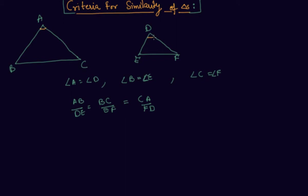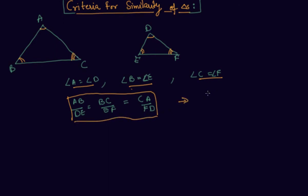This angle should be equal to this, this angle should be equal to this angle, and this angle should be equal to this angle — as we have written over here. And the condition is that the two sides should be proportional to each other. This we directly proved through a presentation in our previous lectures. So this is basically the criteria for similarity of triangles.